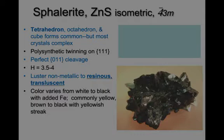Color varies from white to black with addition of iron. It's commonly yellow where it has low iron, to yellow-brown, to black with the highest amount of iron, and the streak is always a yellowish-brown. The polymorph is wurtzite.